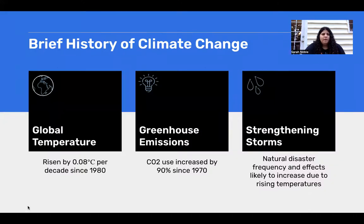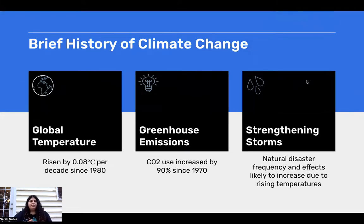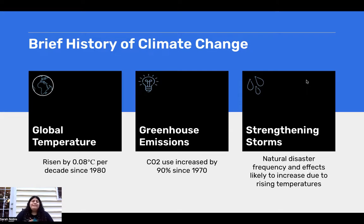So this is emergency management and climate change. First I want to give you a brief history of climate change. The global temperature has risen by 0.08 degrees Celsius per decade since 1980. So since 1980, the earth, while it may not feel like it's gotten much hotter, it has, and everyone here especially in Florida can feel that. Greenhouse emissions and CO2 use increased by 90% since 1970.